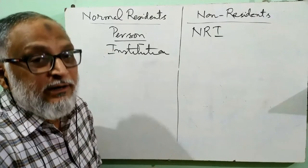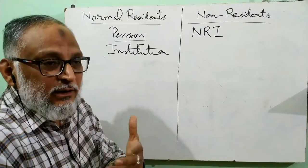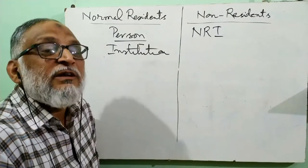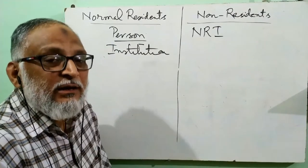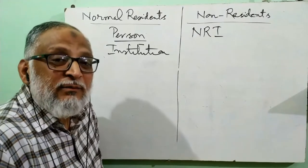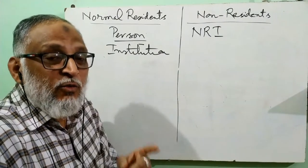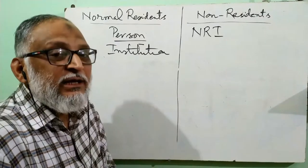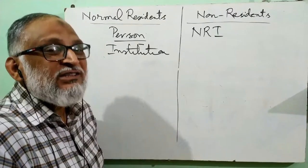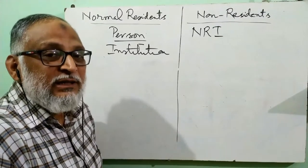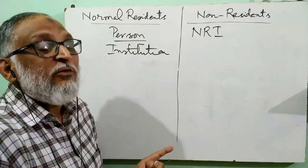Similarly, Indian companies abroad — like a Tata plant operating abroad earning profit, or State Bank of India branches in Britain, Canada, and the Middle East — they are earning and bringing profit back for us. So those institutions — our banks and companies operating in foreign countries — are non-residents for those countries but residents for India, because they are earning for India. Similarly, foreign companies, MNCs, and foreign banks operating in India are earning for foreign countries. That's why they are not normal residents of India — they are non-residents for India.